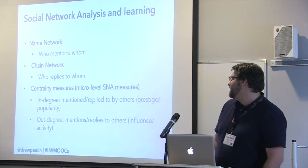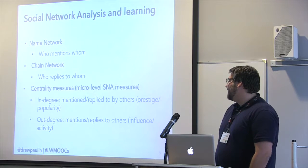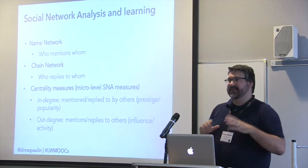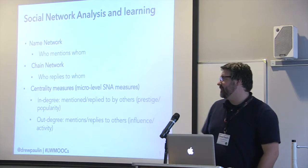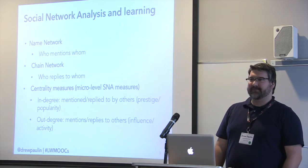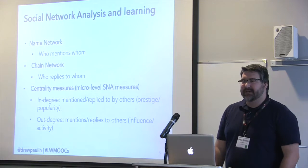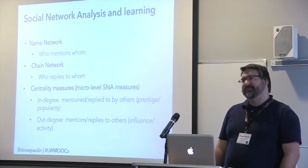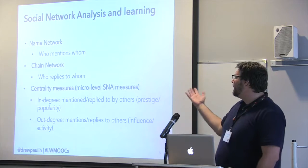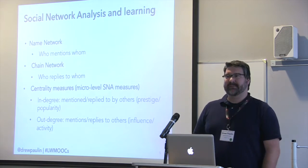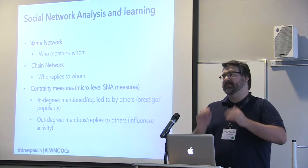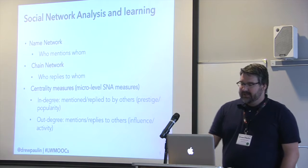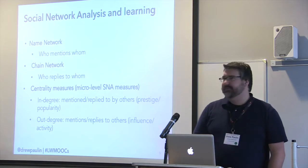We have in-degree, which is when you're mentioned or replied to by others — incoming connections, kind of prestige or popularity. For example, in Twitter analysis at conferences, keynote speakers always have high in-degree because they're constantly being mentioned. Out-degree is basically your activity — mentioning or replying to others. That's like people who are sitting there tweeting every second because they're really active in the network.